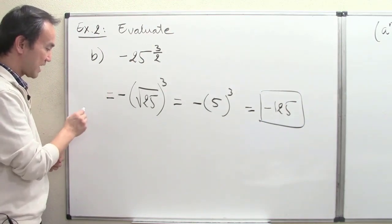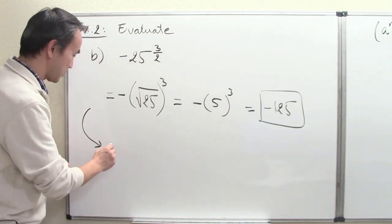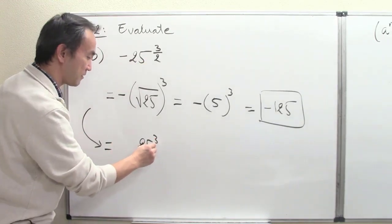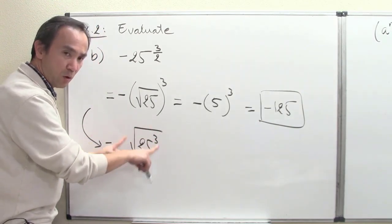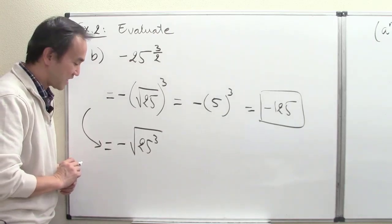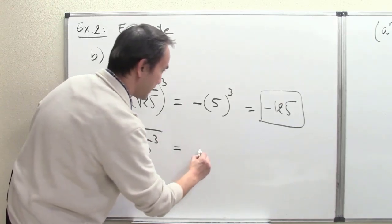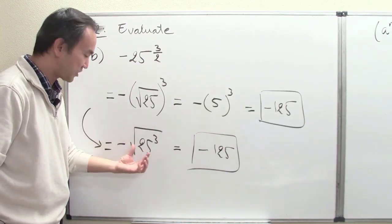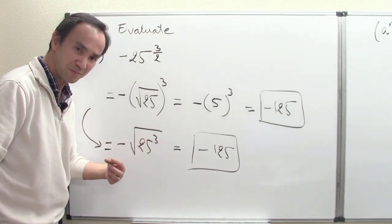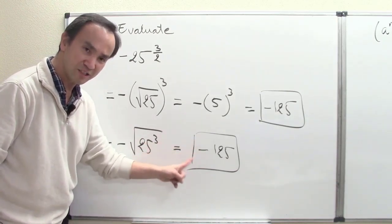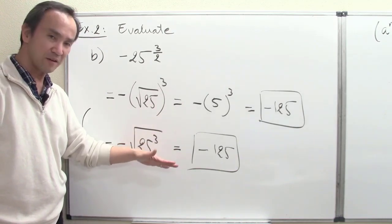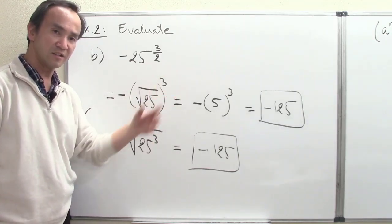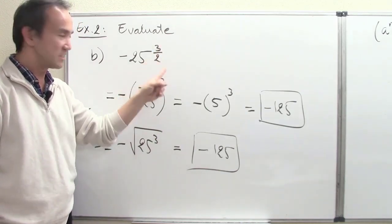The same problem could alternatively be done as: take 25 to the third power first, then take the square root, then apply the negative sign. The order is slightly different but the result is still negative 125. This second route requires more calculation since 25 to the third power needs a calculator. Either way, both routes utilize the understanding of how we can express a rational exponent whose numerator is no longer just 1.